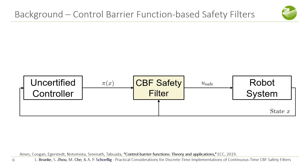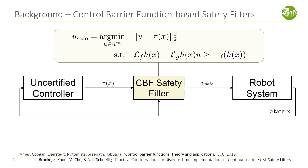We can use this idea in a safety filter. The safety filter takes an uncertified control input and potentially modifies and certifies it before applying a safe control input to the robotic system. This filtering can be formulated as a quadratic program where the objective is to match the uncertified control input and the constraint is the CBF condition.